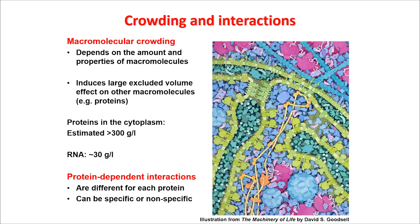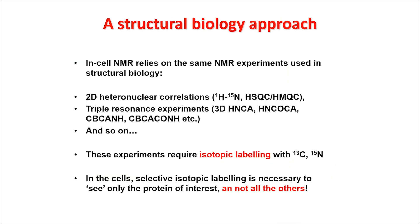This effect is also dependent on the chemical properties of the surface of your protein, so it can be protein-dependent. The main effect of macromolecular crowding is the excluded volume, which has a thermodynamic effect on the stability of the folding of your proteins. But there are also protein-dependent effects such as interactions occurring between components of the cellular milieu and the surface of your protein. These are clearly very protein-specific and can have profound effects on the NMR spectra.